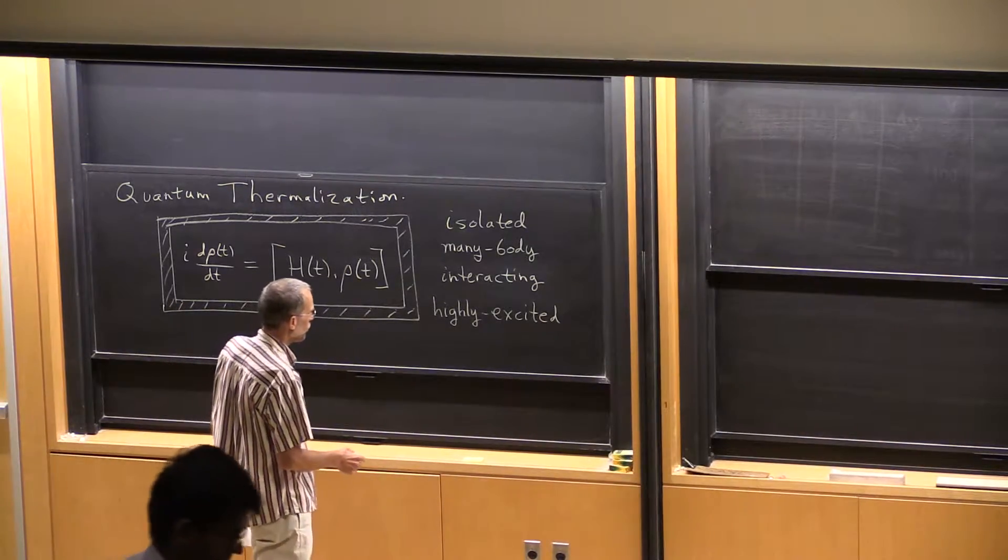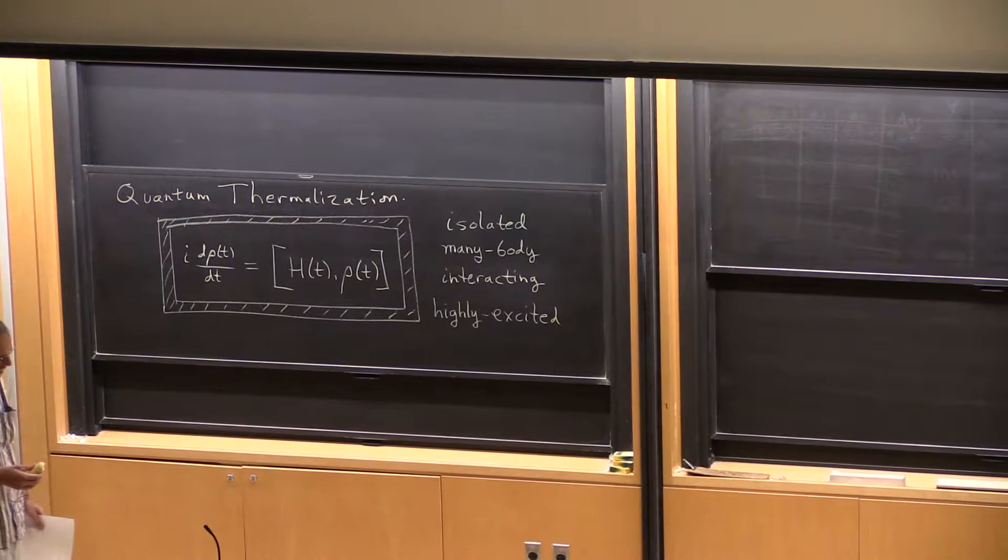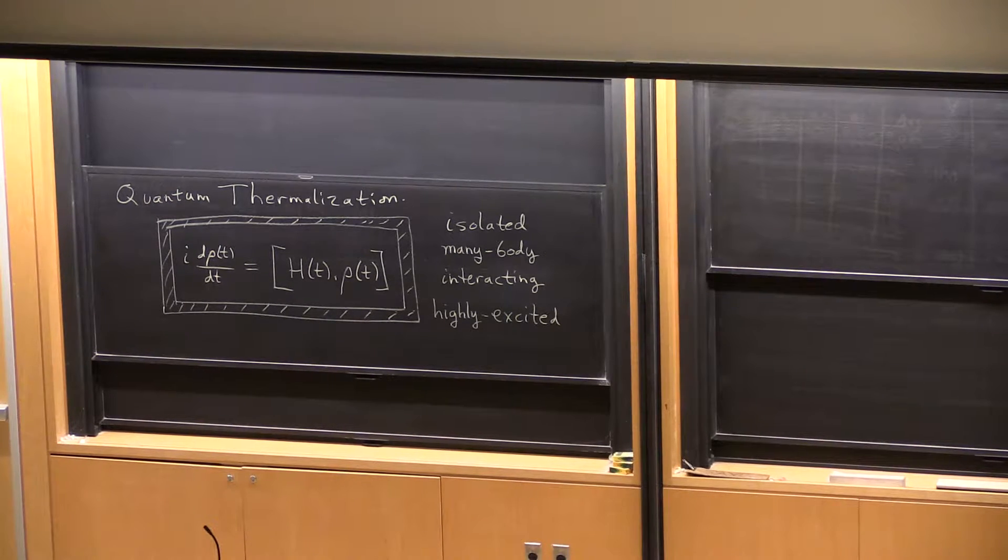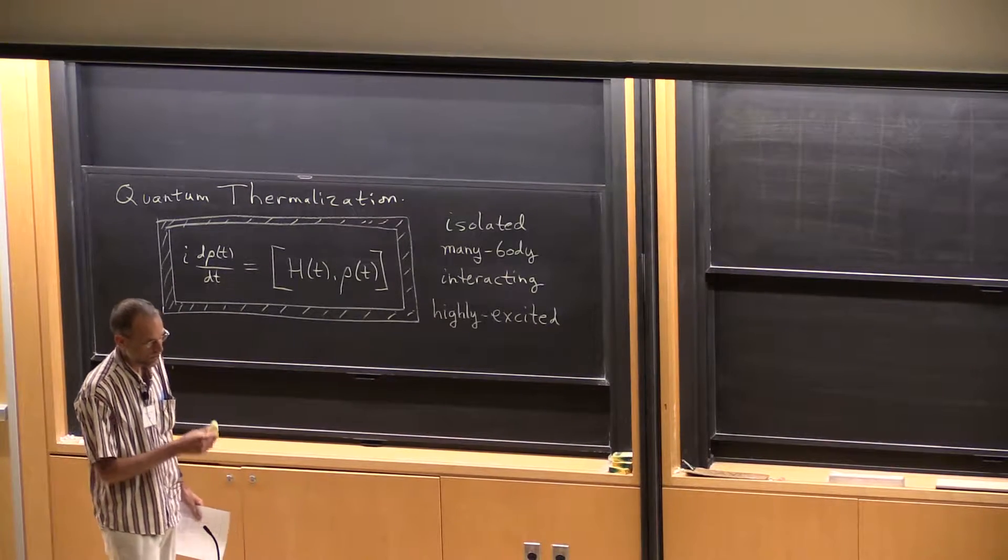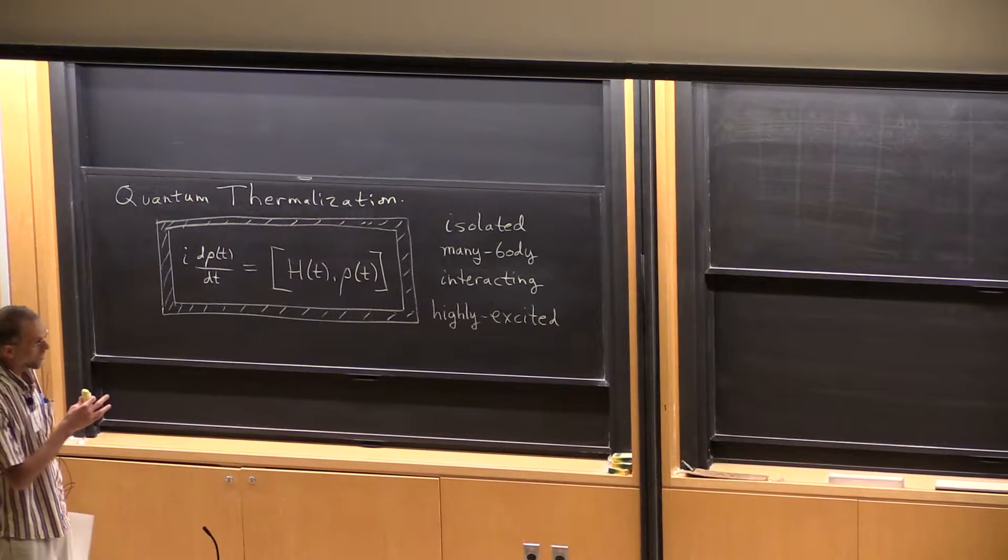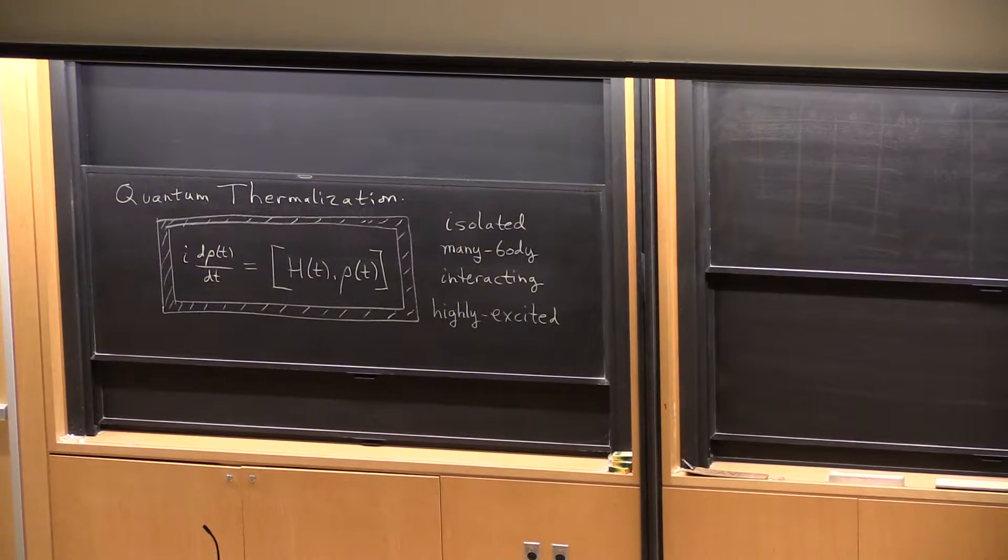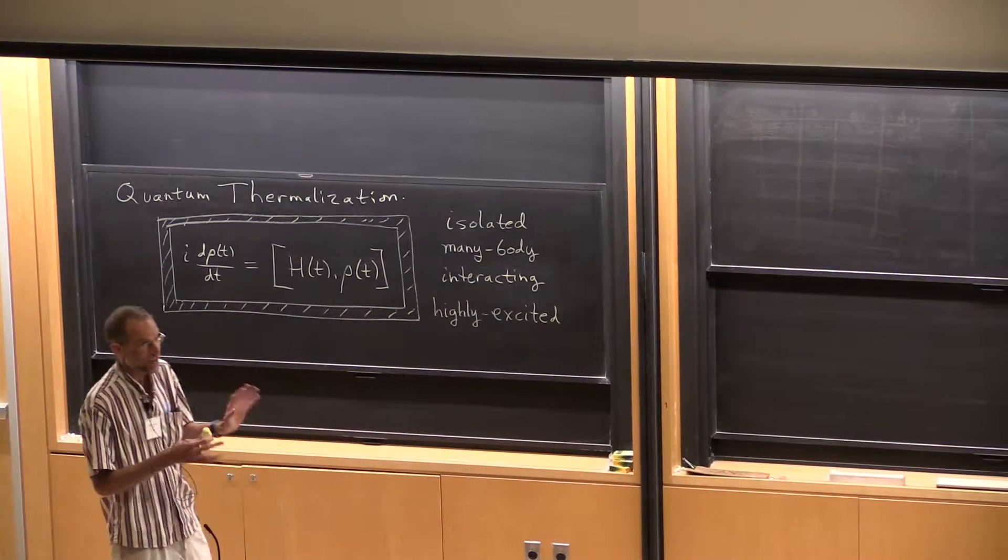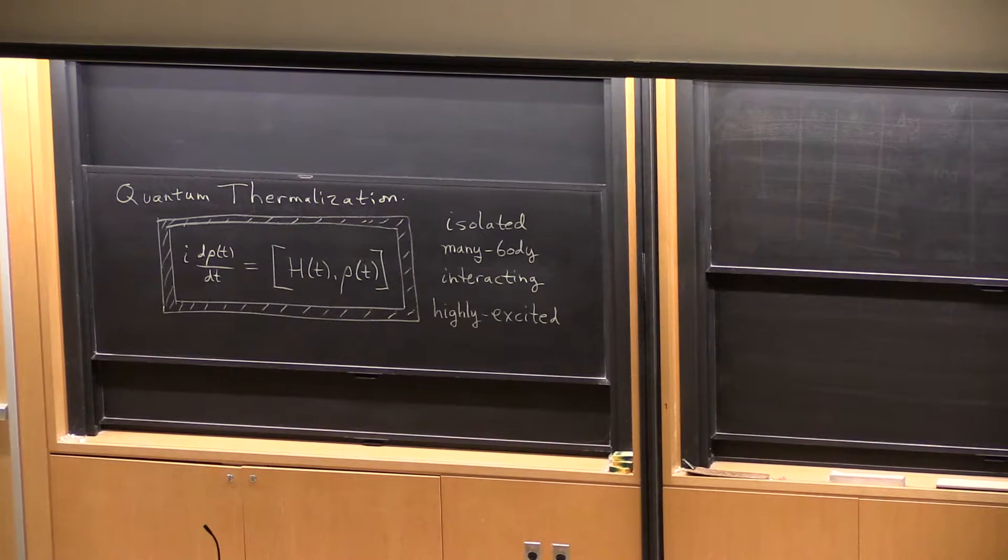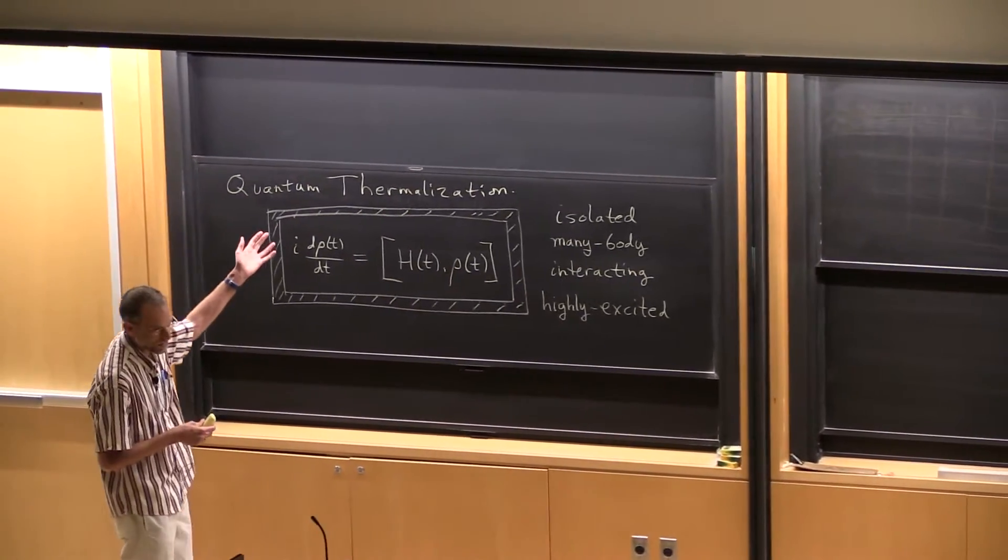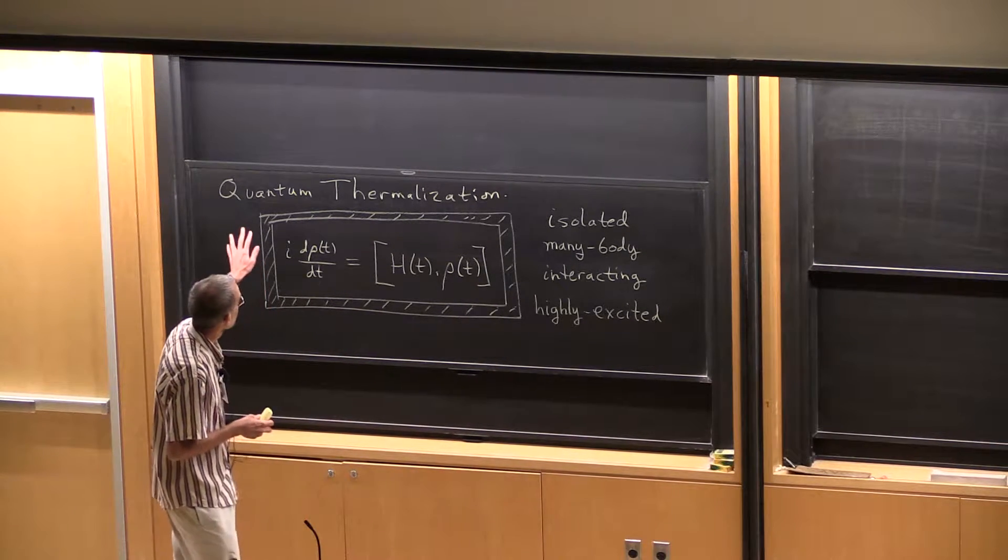The two themes of this summer school are many-body localization and frustrated magnetism. I'm going to talk today about not many-body localization, but the opposite of many-body localization. This is part of the many-body localization program, but we have to talk about what many-body localization isn't before talking about what it is. And what it isn't is thermalization. This is what I'm going to tell you about in today's lecture: quantum thermalization.